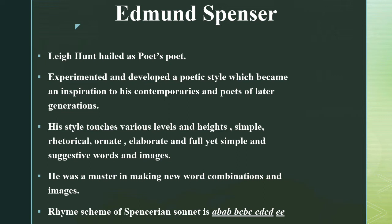For example, John Keats is a poet of the Romantic period. He is speaking about Spenser's style. His style touches various levels and heights: simple, rhetorical, ornate, elaborate and full, yet simple and suggestive words and images. This is a very simple and beautiful type of writing. And he was a master in making new word combinations and images.